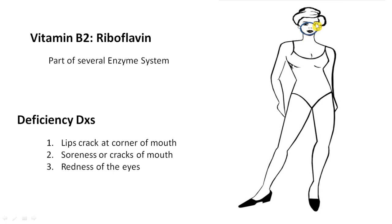Next is Vitamin B2 — Riboflavin. Coming down to the nose: just as the nose connects to the pharynx, mouth, and larynx, riboflavin is similarly part of several different enzyme systems. Its deficiency causes cracks at the corners of the mouth, soreness or cracks of the lips, and redness of the eyes — all related to this facial area.